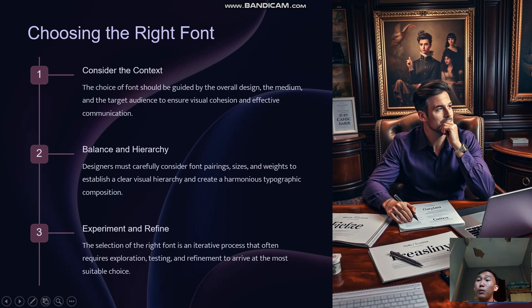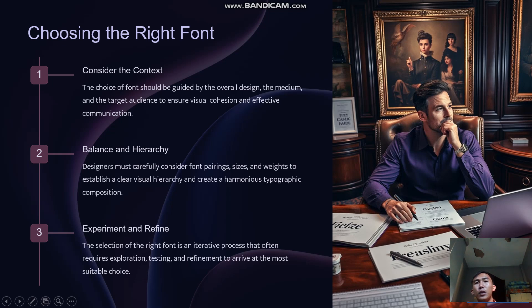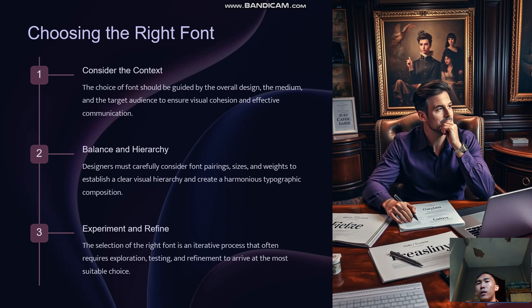The next topic is choosing the right font. There are three key considerations: context, balance and hierarchy, and experimentation and refinement. The choice of font should be guided by the overall design, the medium, and the target audience to ensure visual cohesion and effective communication. Designers must carefully consider font pairing, sizes, and weight to establish a clear visual hierarchy and create a harmonious typographic composition. Finally, selecting the right font is an iterative process that often requires exploration, testing, and refinement to arrive at the most suitable choices.